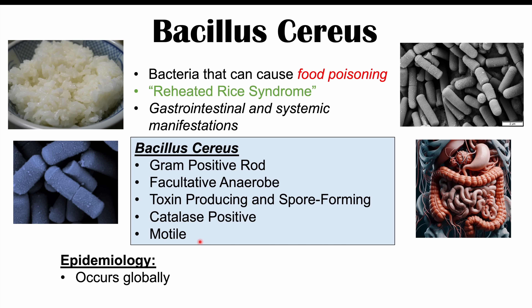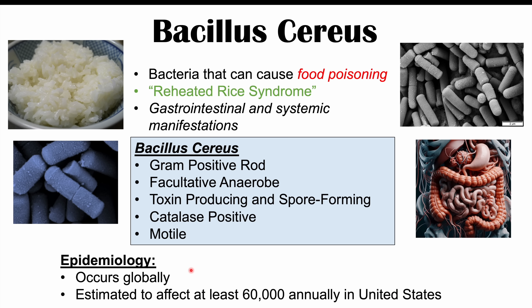This bacteria is found globally and food poisoning caused by Bacillus cereus is relatively common. It's estimated to affect at least 60,000 people annually in the United States. This occurs worldwide and it's likely underreported — many people probably get food poisoning from Bacillus cereus and don't even know it.